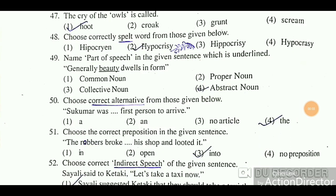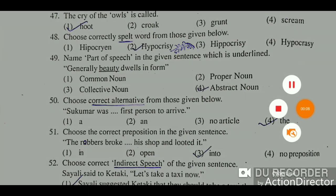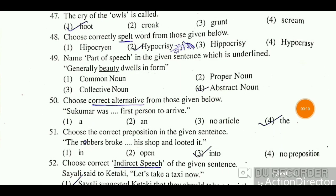Choose the name part of speech in the given sentence which is underlined: 'Generally beauty dwells in form.' The word 'beauty' — its part of speech needs to be identified. 'Beauty' means 'saundarya' (beauty) in Marathi, which we cannot touch, so in Marathi it is a 'bhavachak naam' (abstract noun). In English, the word is 'abstract noun'.